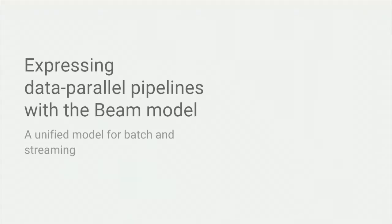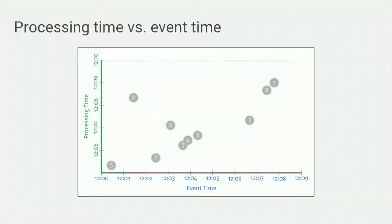Let's look at the unified model and see how the Beam model can express data processing pipelines across a wide variety of use cases. If we are going to support batch and streaming at the same time, the really key difference we have to understand is the separation between event time and processing time. Event time is the time the event actually occurred; processing time is the time our system gets a chance to process that element. Due to various effects, processing time is often later than the actual event time.